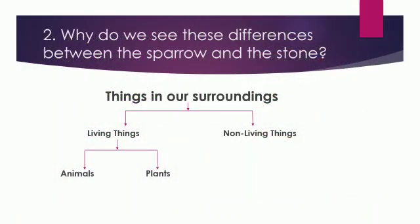Why do we see this difference between a stone and a sparrow? It is because a sparrow is a living thing and a stone is a non-living thing. The things that we see in our environment are divided into two groups: living things and non-living things. Living things are further divided into two groups: animals and plants.